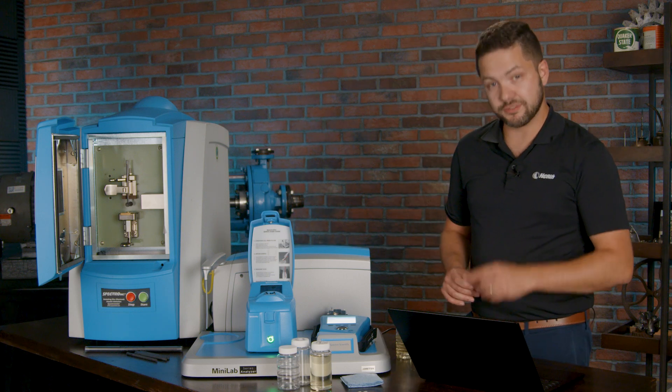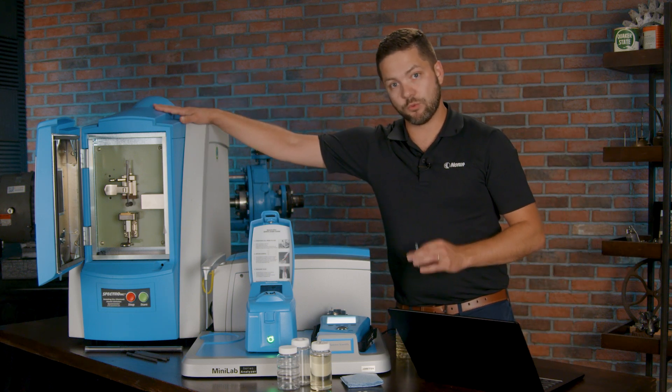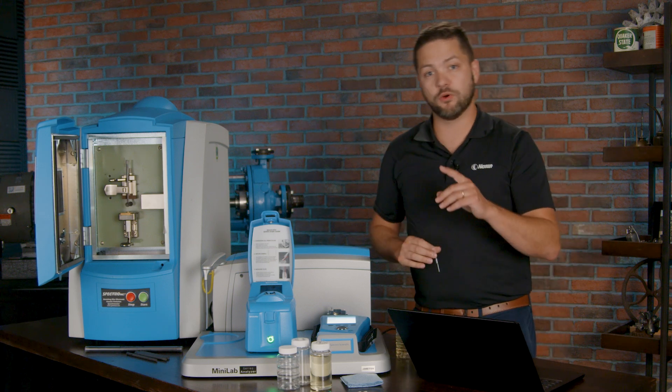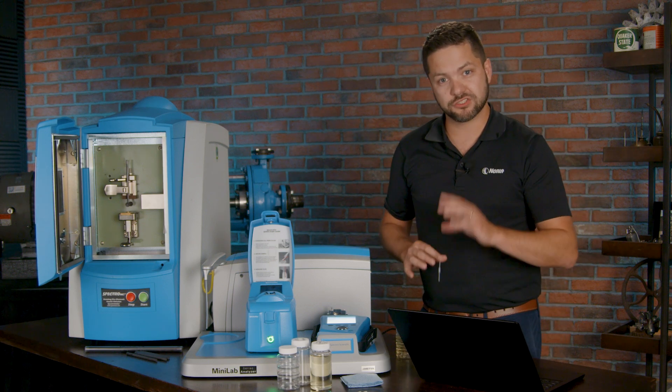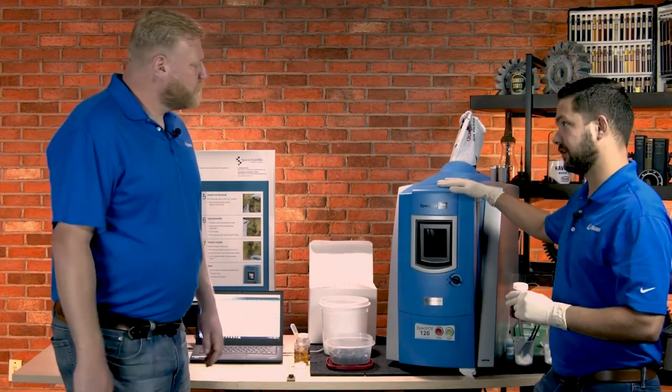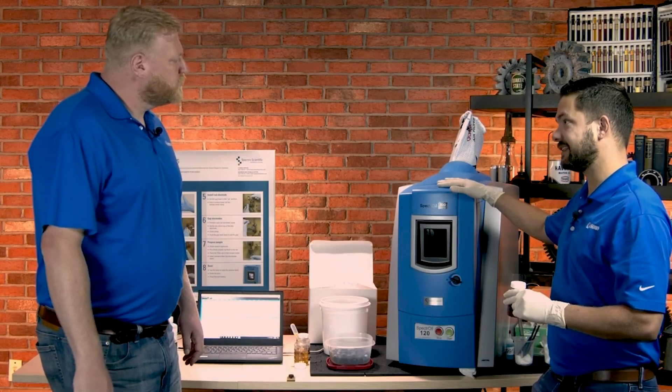Let's go on to the elemental analysis. Now that's the big one here. We're going to actually cut away to our other unboxing video to show how this works. Now this type of elemental spectrometer is a RDE, rotating disc electrode.